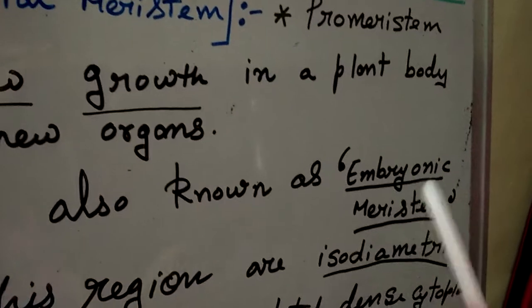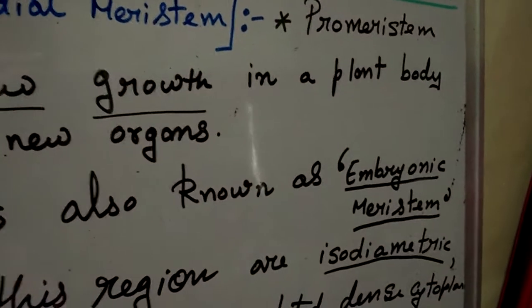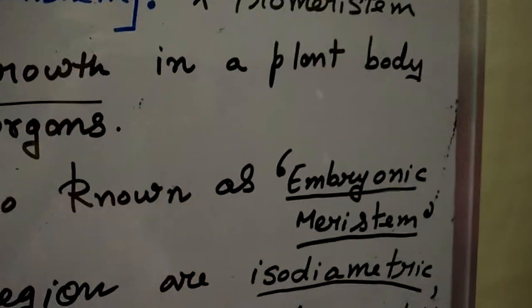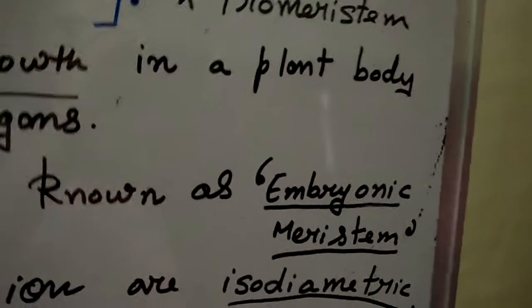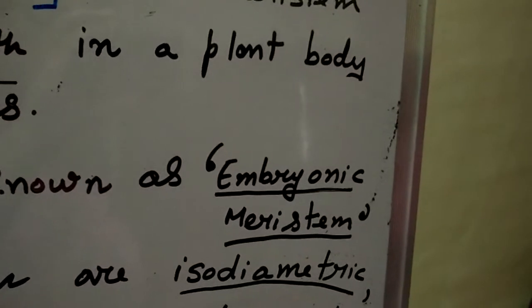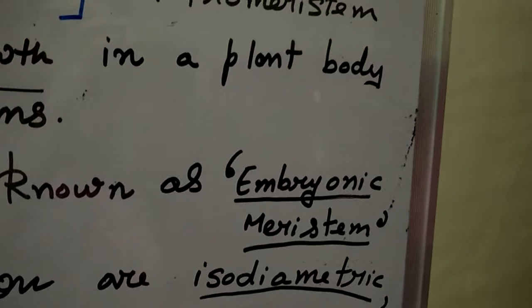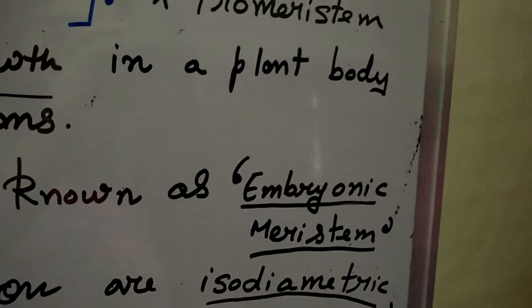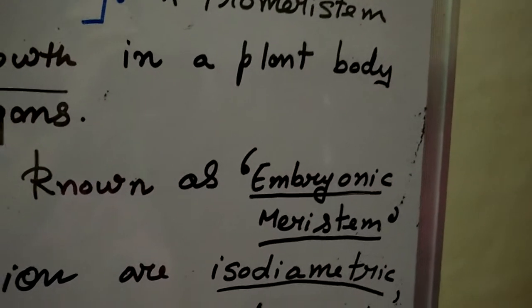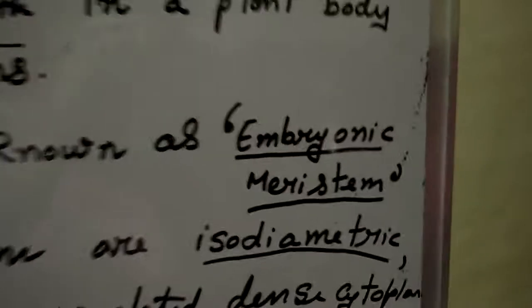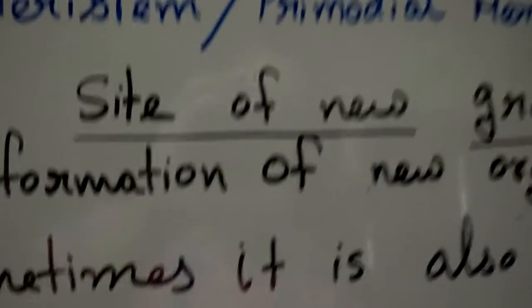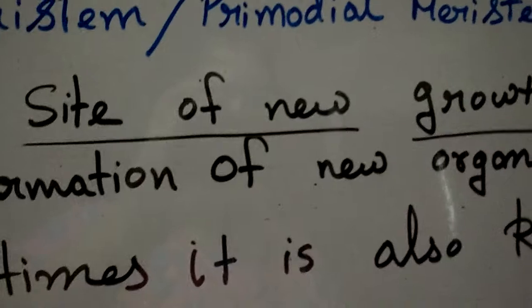Pro-meristem or primordial meristem is also known as embryonic meristem. Since an embryo is the start or origin of a new life in the animal or plant kingdom, pro-meristem is associated with that early stage of development.